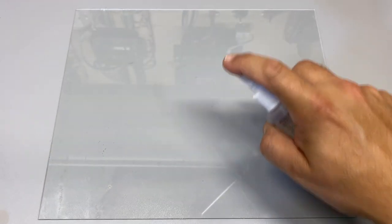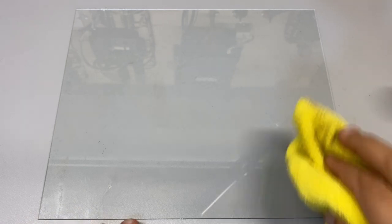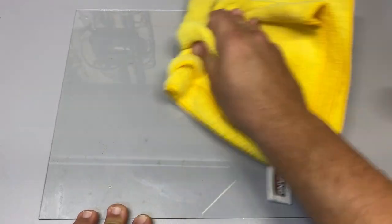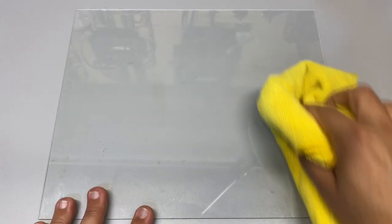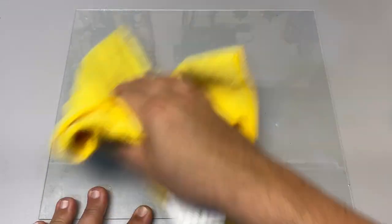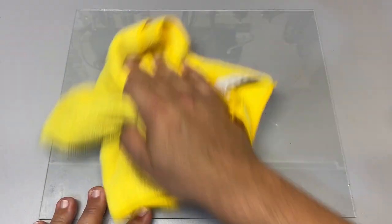You just give it a spritz. I like to give it a spritz, let it sit just like I do with the other stuff, and then use a different rag. Don't use the same rag we used for the window cleaner. Give it a nice little swirl, flip it over once, do it again. You really want to make sure it's on there. Start the whole process over again. And there you go. That's really all there is to this. And then this is now ready to take VHB.